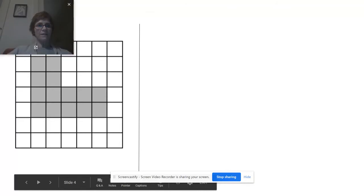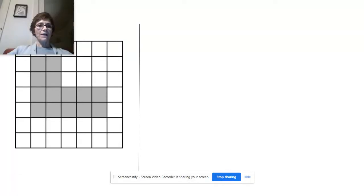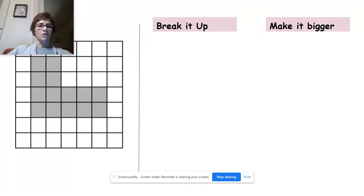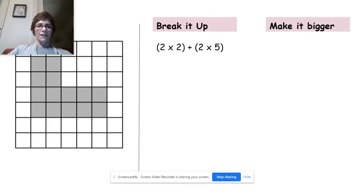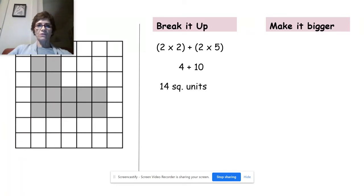Okay, let's look at another one. Again this is not a rectangle, so what can we do? We can break it up into two rectangles or we can make it bigger. This side is four and this side is five. We can break it along this line here — that means we have a square that's 2 times 2, and then we add a 2 times 5. 2 times 2 is 4 plus 2 times 5 is 10: 4 plus 10 is 14 square units.